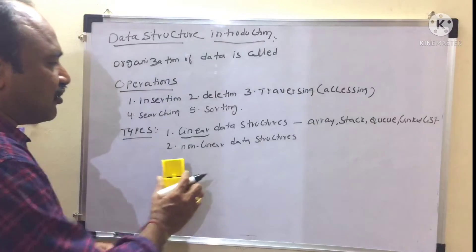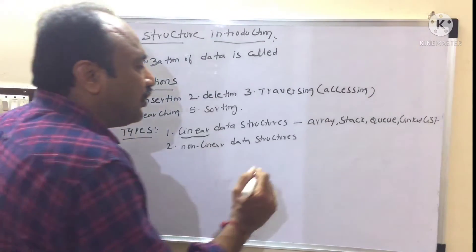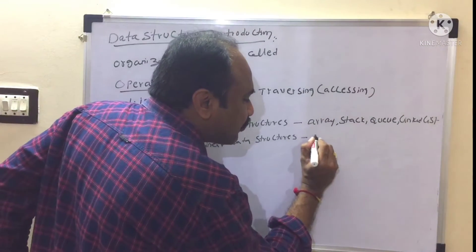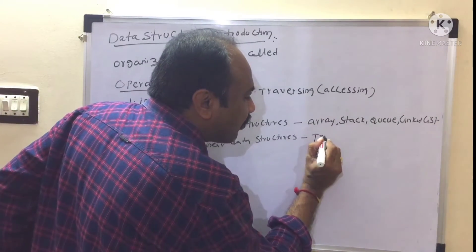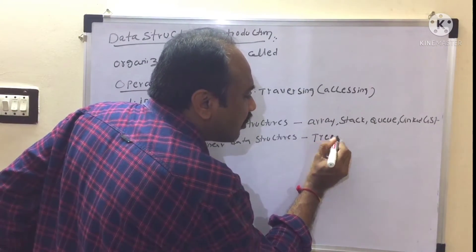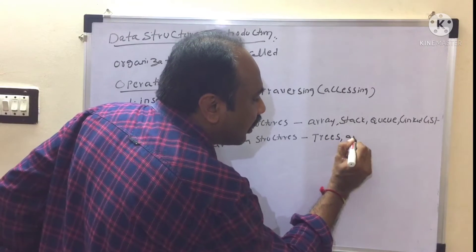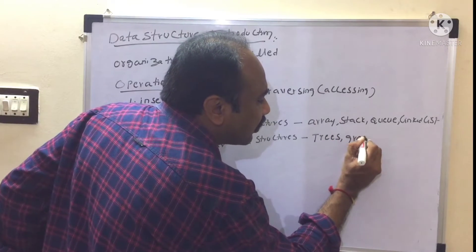Non-linear data structures: trees and graphs are referred to as non-linear data structures.